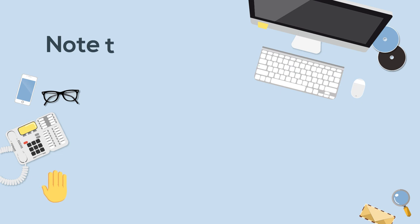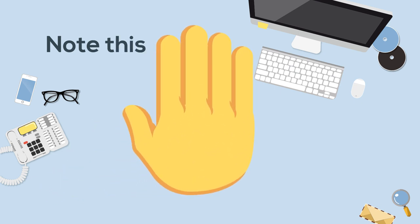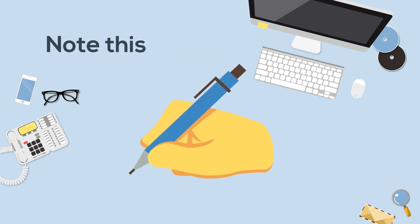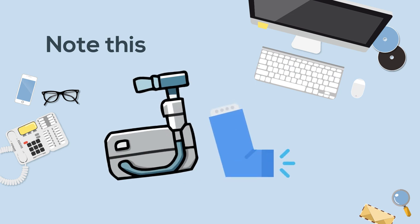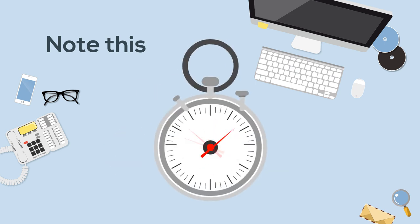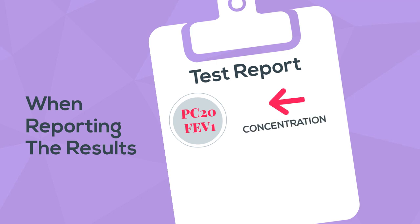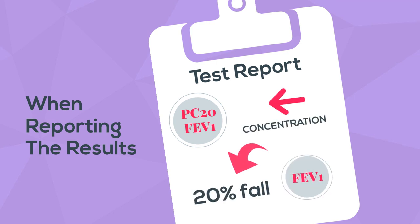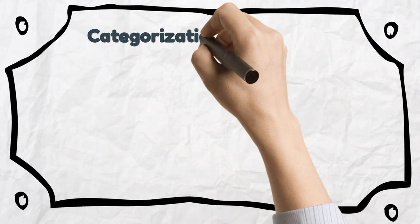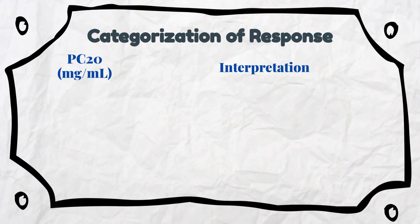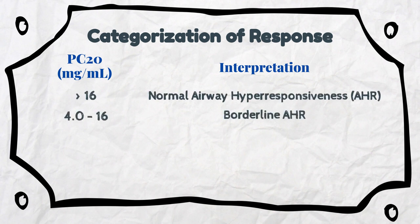If for any reason you need to stop the test, record signs and symptoms, give albuterol, wait 10 minutes, and perform spirometry. The final test report should include PC20 FEV1, which is the concentration that causes a 20% fall in FEV1. Please note: the lower the PC20, the more severe the airway hyperresponsiveness.